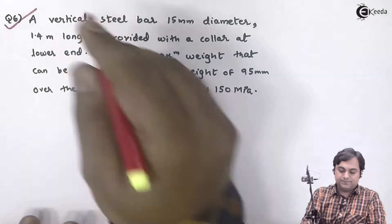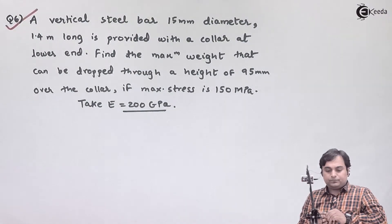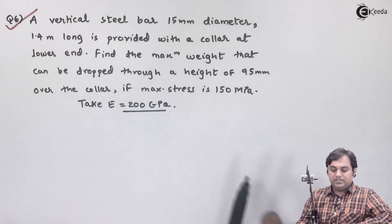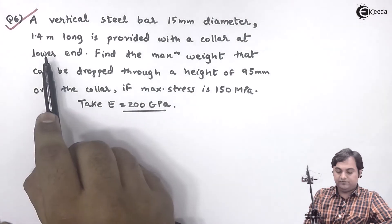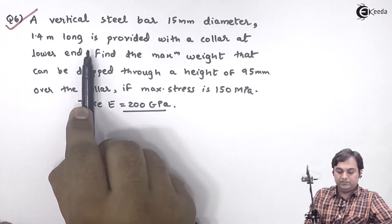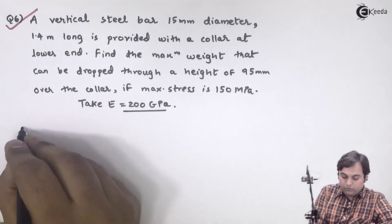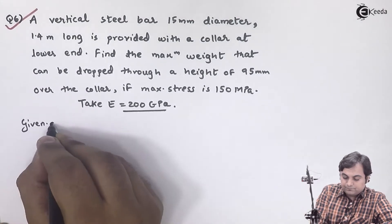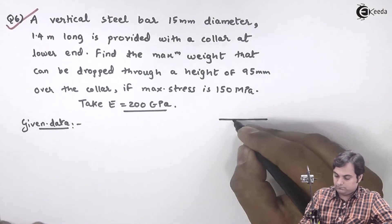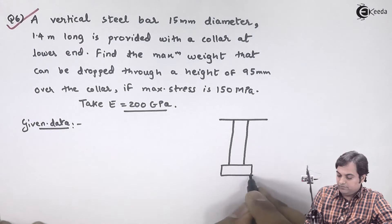Let us take question number six. It is given that a vertical steel bar, 15 mm diameter, 1.4 meter long, is provided with a collar at lower end. Let me draw the diagram first.